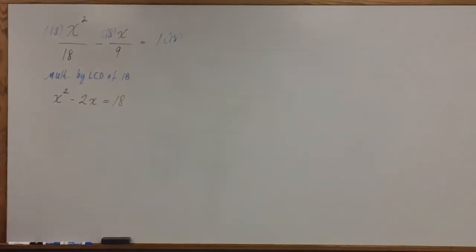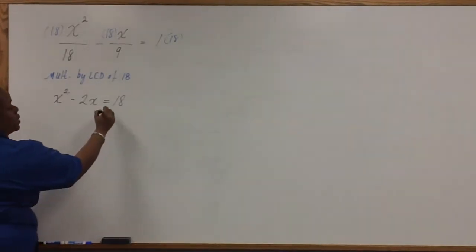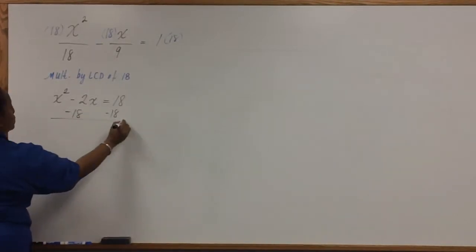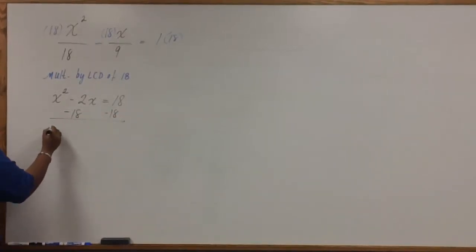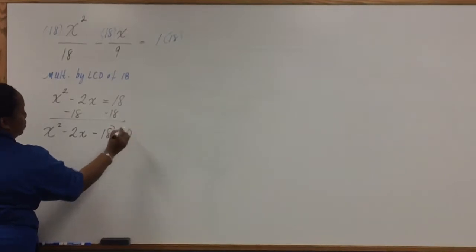But we aren't done because before we can use the quadratic formula, we have to set this equal to 0. And we can set it equal to 0 by subtracting 18 from both sides.